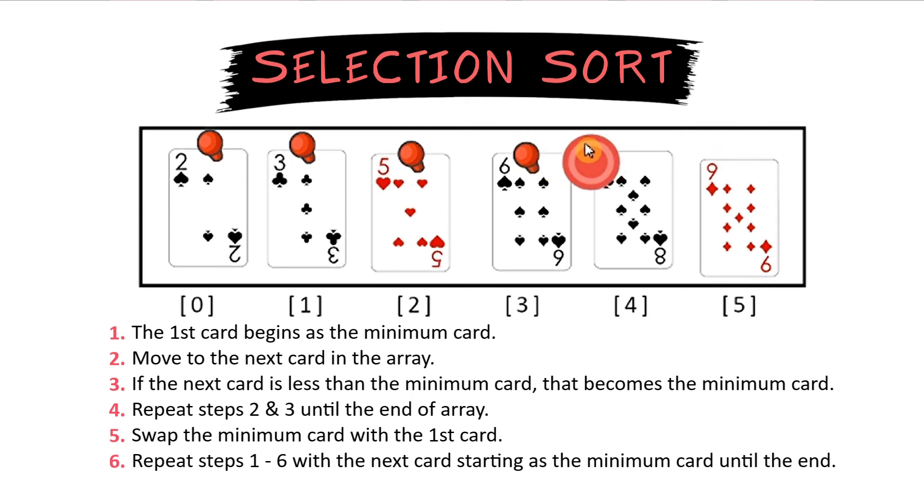One last time 8 is now the minimum number. We'll check to see if 9 is less than 8. It is not so no swap is needed. We can mark 8 as sorted and with no other cards left 9 must be sorted.